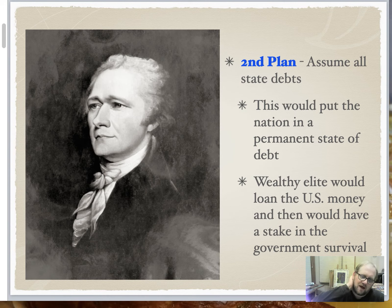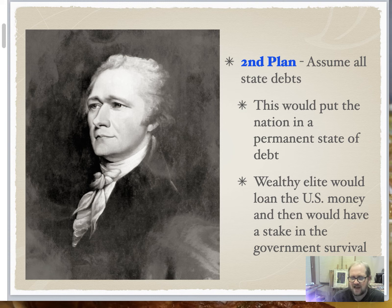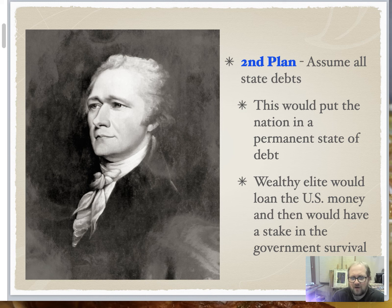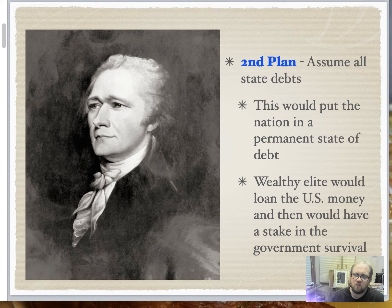The second part of the plan was to assume all state debts — the federal government would take on every state's Revolutionary War debt as its own. This was uneven, though, because some states had already paid back their debt, so there was a lot of debate about whether this was fair. Hamilton also thought that if a wealthy elite loaned the U.S. money, they would have a stake in the survival of the United States.